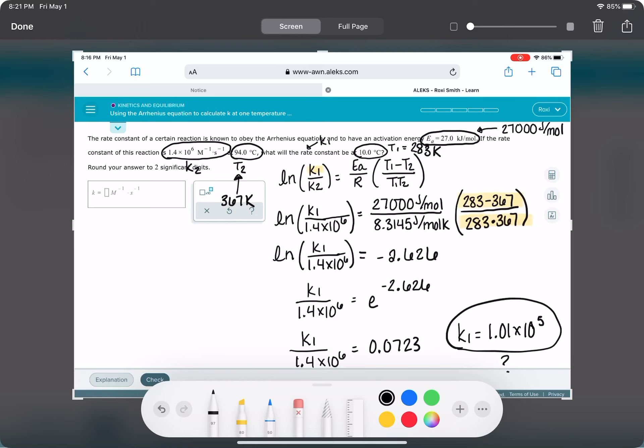And does that make sense? Because that seems like a really big number. How can we decide if it actually makes sense? We can look back at our original rate constant. I'm going to erase some of this stuff so we can see it better.